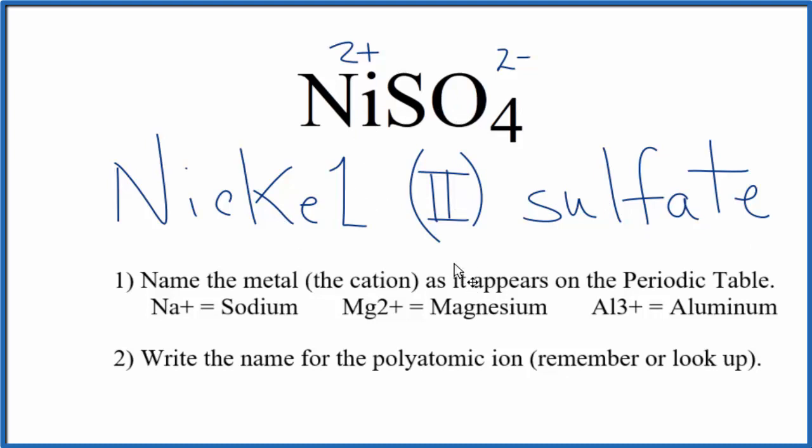If you were given the name and asked for the formula, you'd know that nickel has a 2 plus ionic charge because it says nickel II. You know the sulfate is always 2 minus. So you'll have one nickel and one sulfate, NiSO4, for nickel II sulfate.